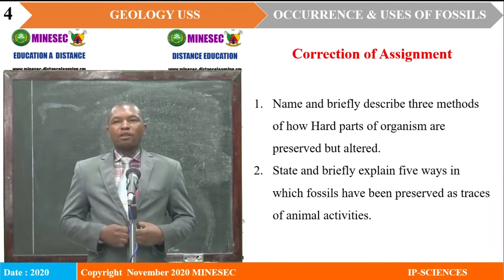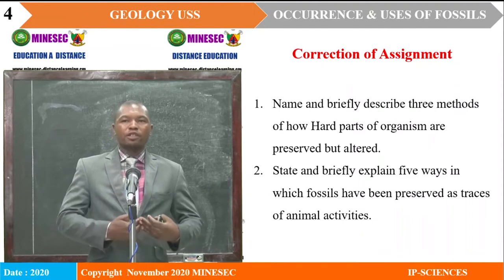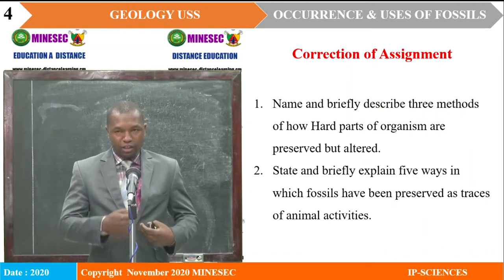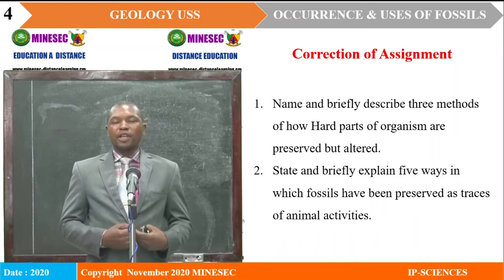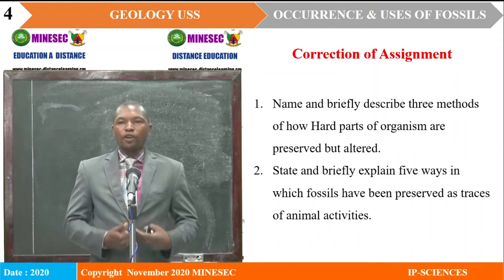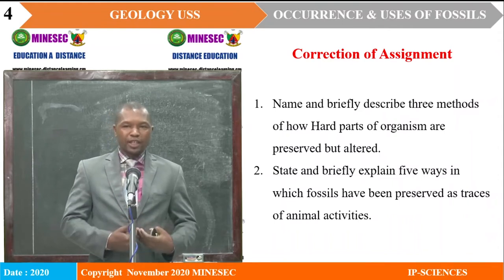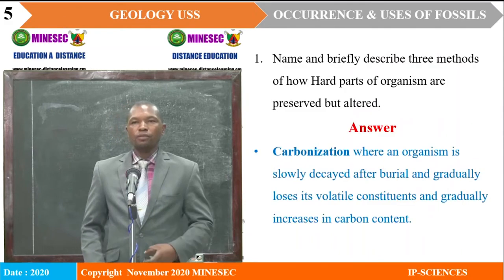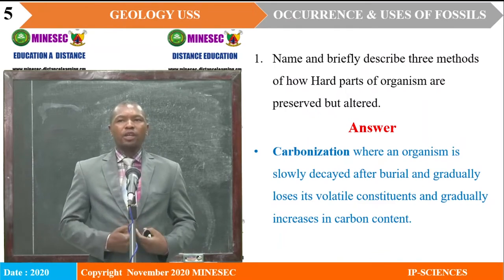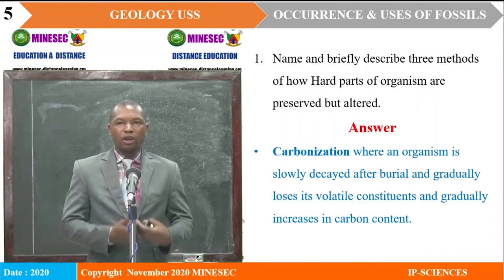During our last lesson, we had some work to do at home. It required that we should name and briefly describe three methods of how hard parts of organisms are preserved but altered. The second part of that assignment required that we should state and briefly explain five ways in which fossils have been preserved as traces of animal activities.